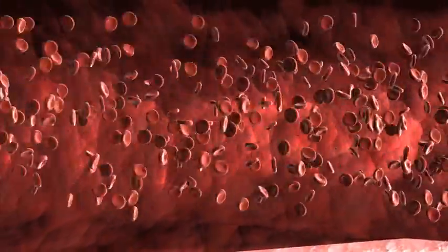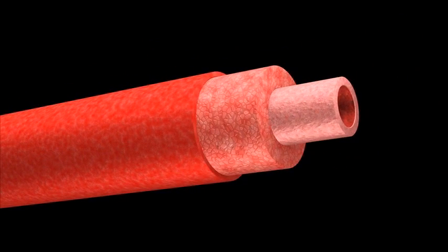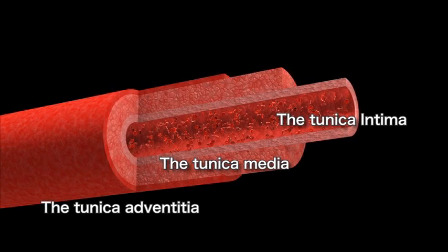Blood vessels circulate the blood throughout the entire body. Blood vessels are composed of three layers: the tunica intima, the tunica media, and the tunica adventitia.